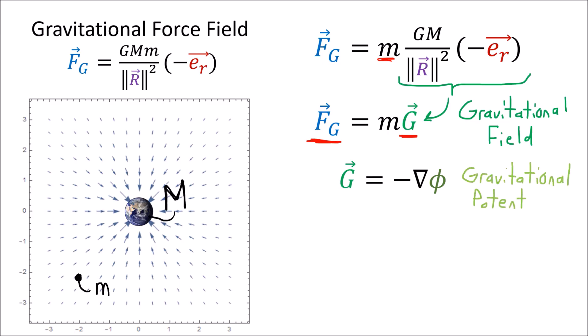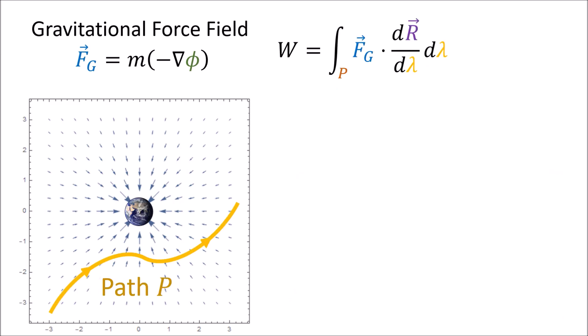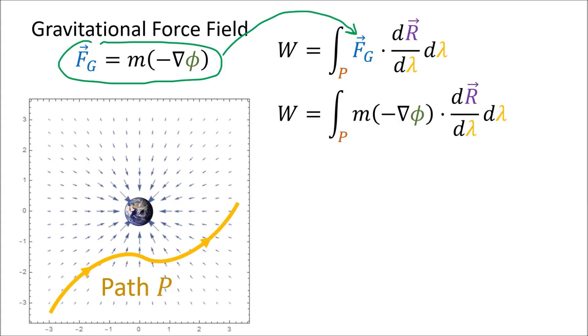Another way of writing the gravitational force vector acting on a mass is by taking the mass m and multiplying it by the negative gradient of the gravitational potential field phi. When we visualize the gravitational potential it looks like this — red is positive and blue is negative. Normally gradient vectors point toward the positive values of a scalar field, but since we're using the negative gradient the vectors actually point inward toward the earth, as we would expect for gravity.